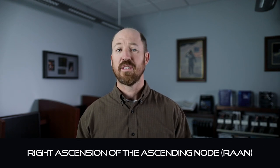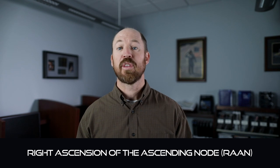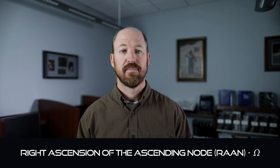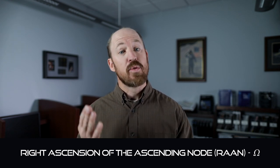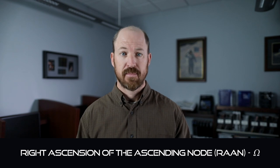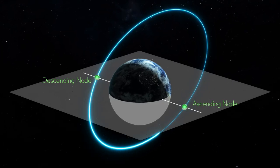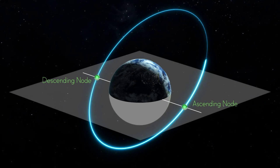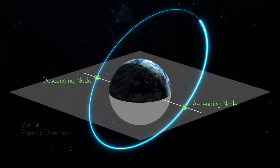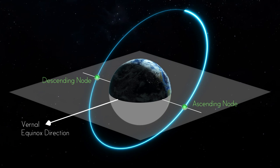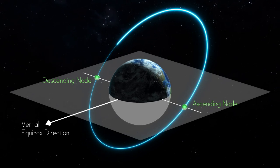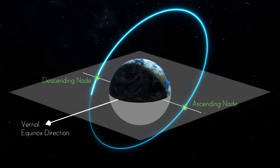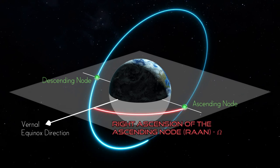The next COE is right ascension of the ascending node, or RAAN, also called longitude of ascending node, depicted with the Greek letter capital omega. RAAN measures orbital twist and identifies where in the orbit the satellite rises up through the equatorial plane. Since the Earth and the satellite both move and rotate, we must measure the ascending node from a point that is stationary or fixed. To do this, we use the vernal equinox direction — a line or vector from the center of the Earth through the center of the Sun on the first day of spring. So RAAN is measured from the vernal equinox direction to the ascending node.